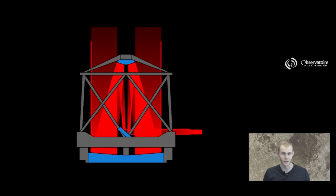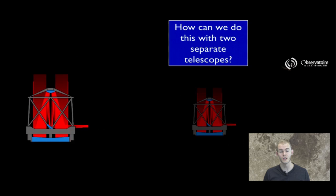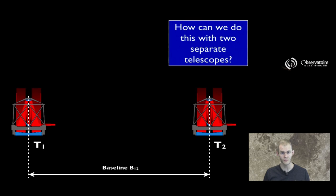Now it becomes a little trickier when you think about trying to achieve the same thing using two separate telescopes. So here I have labeled T1 and T2 my two telescopes that are separated by a pretty large distance that we are going to call the baseline, B12. That can be several times or several tens or hundreds of times the size of the telescope, the diameter of the telescope. It's a few hundreds of meters.